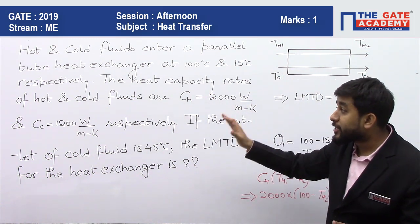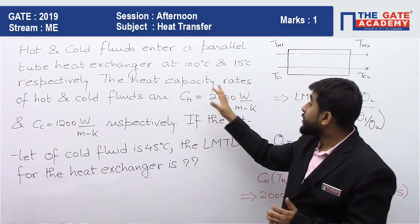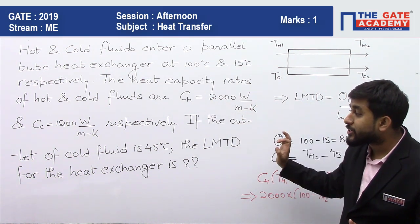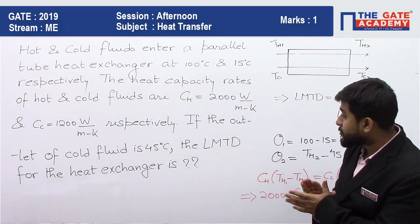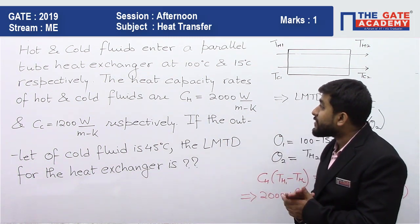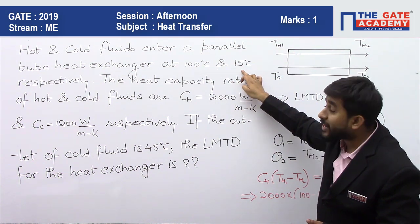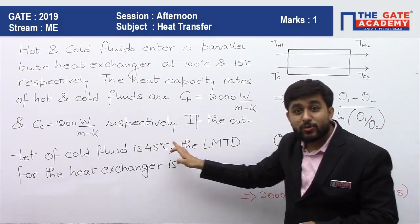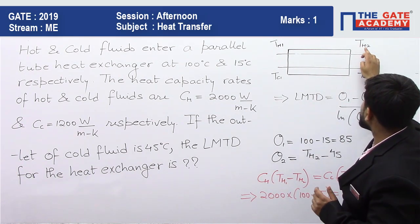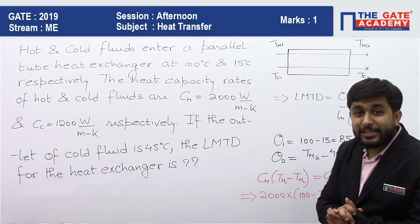The heat capacity rates — recall that heat capacity rate is mass flow rate times specific heat — of the hot and cold fluid are 2000 W/K and 1200 W/K respectively. The inlet of the hot fluid TH1 is 100°C, the cold fluid inlet TC1 is 15°C, and the outlet of the cold fluid TC2 is 45°C. The only unknown is TH2, and we need to find the LMTD of this heat exchanger.